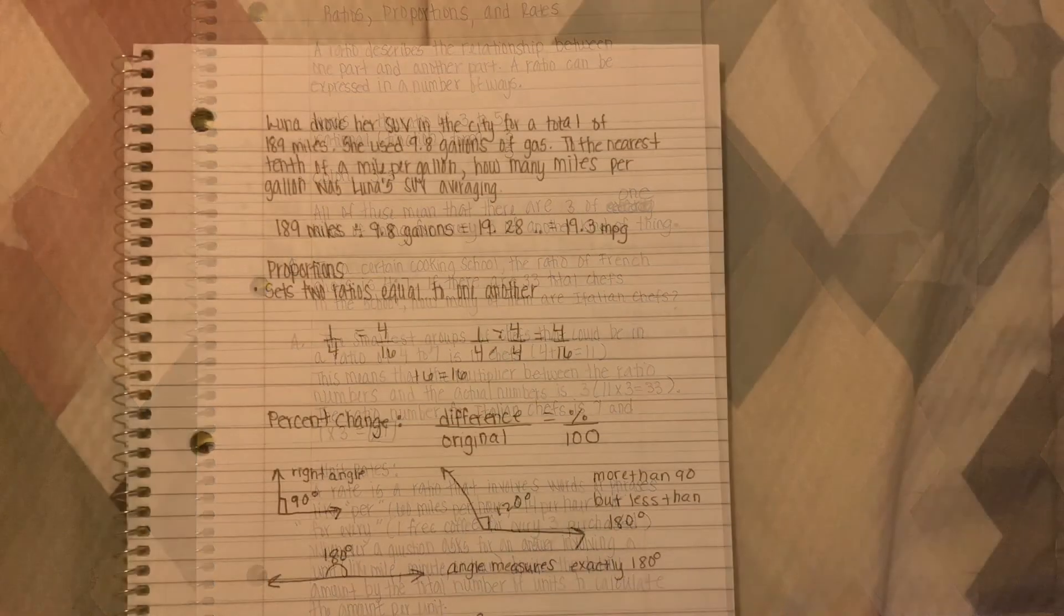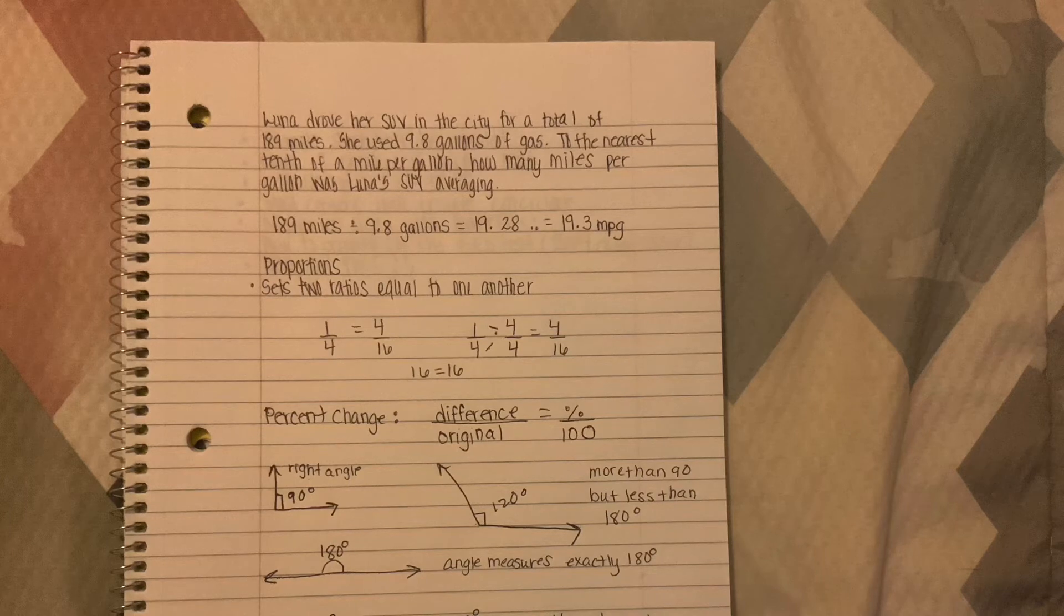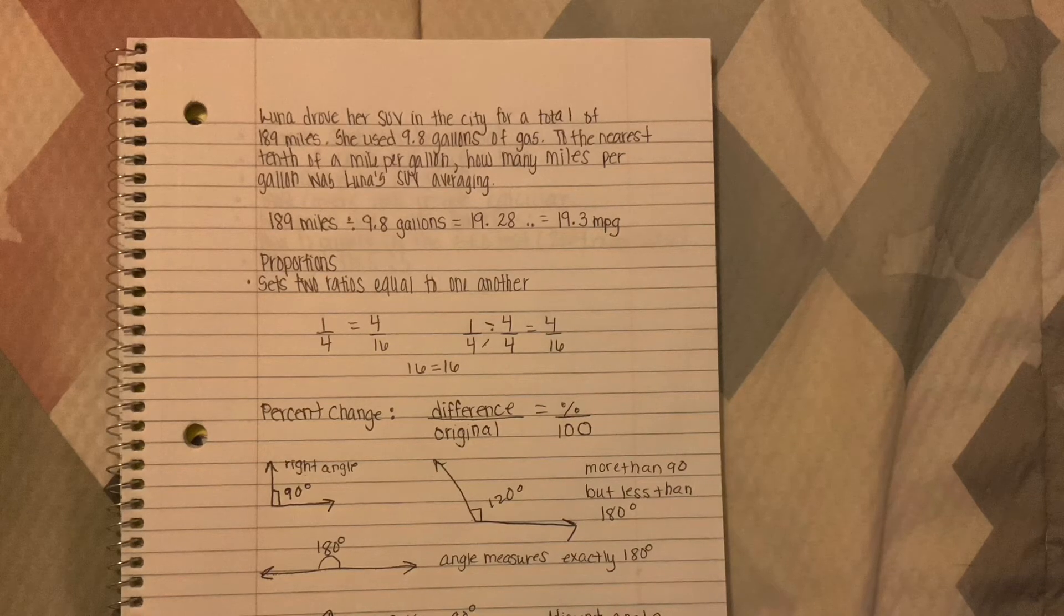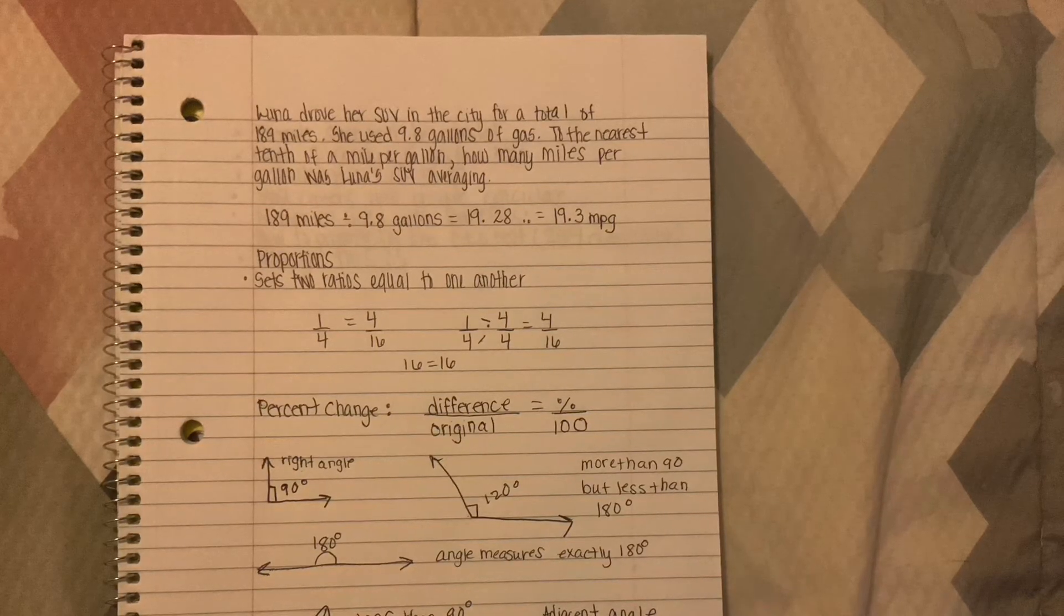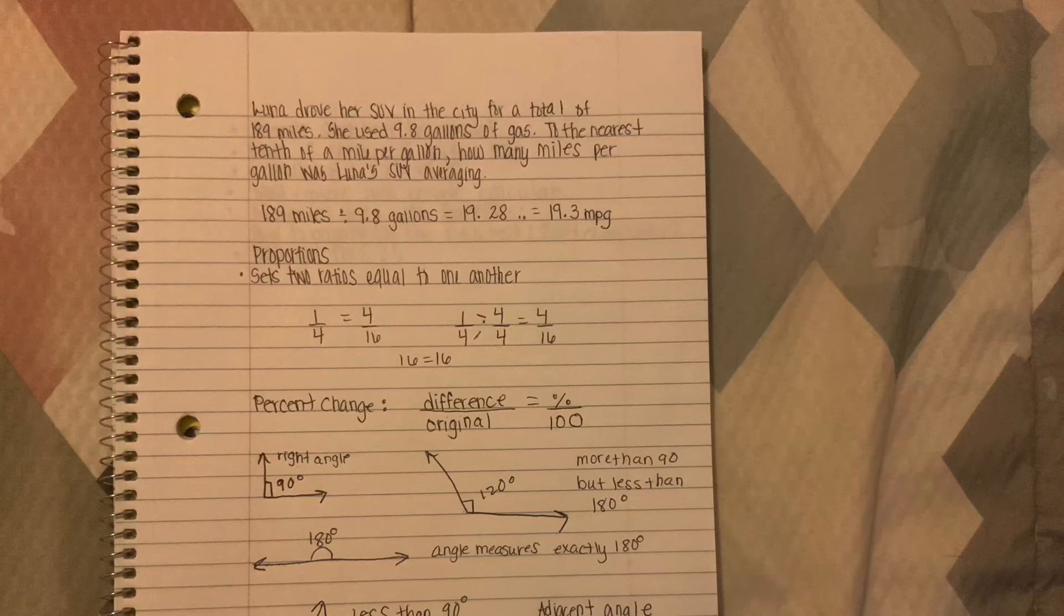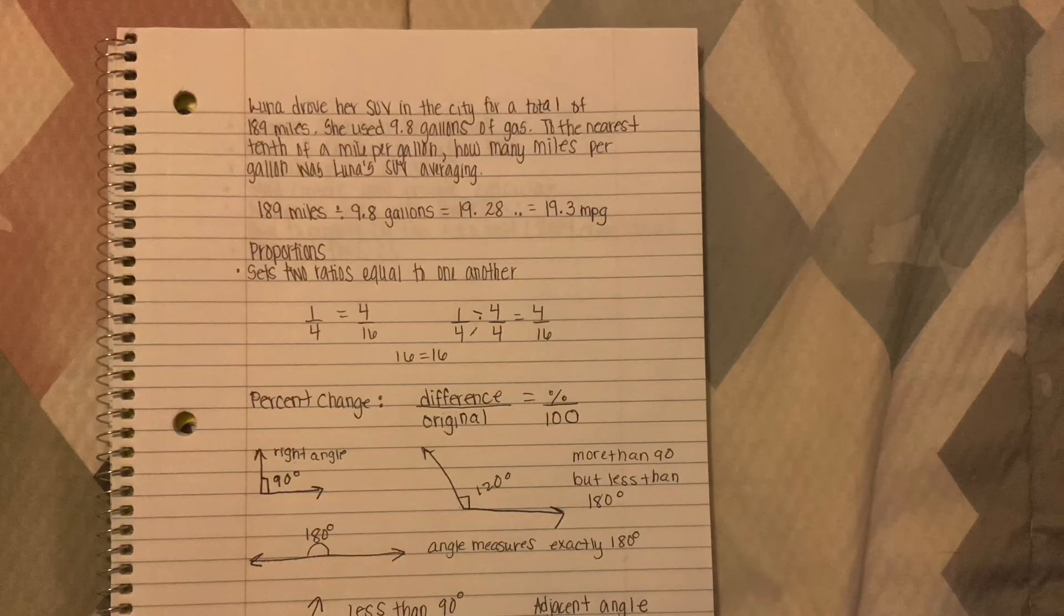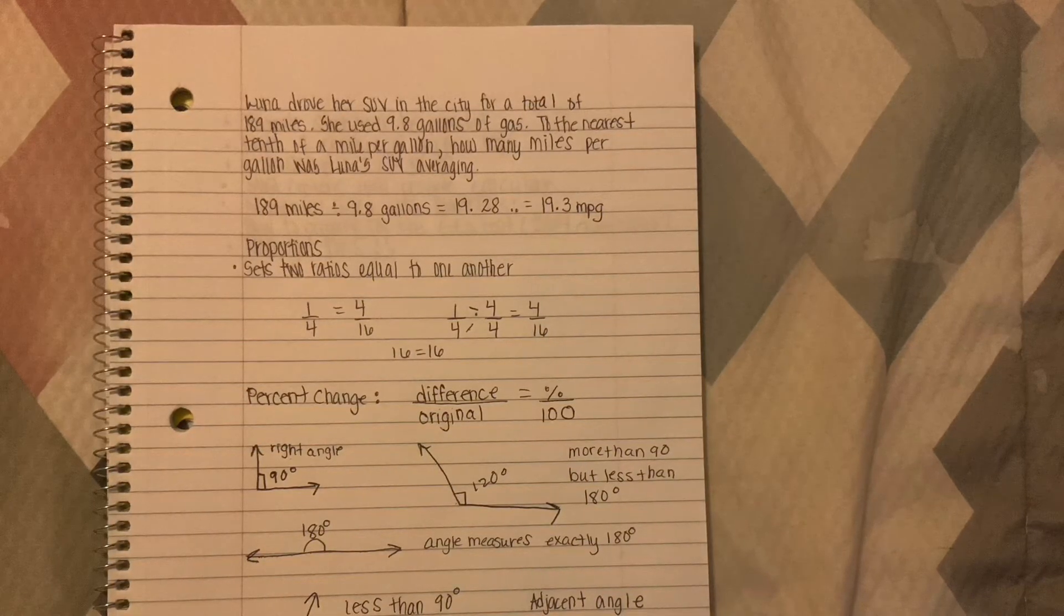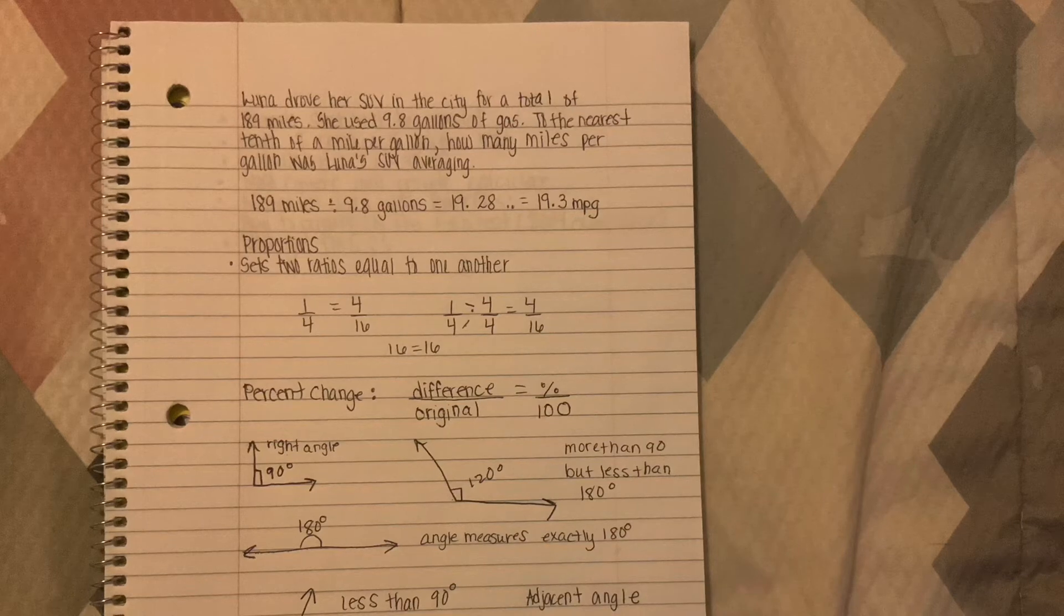Let's solve another problem with unit rates. Luna drove her SUV in the city for a total of 189 miles. She used 9.8 gallons of gas. To the nearest tenth of a mile per gallon, how many miles per gallon was Luna's SUV averaging? We take 189 miles and divide by 9.8 gallons, which gives us 19.28. Since they want us to round it up to the nearest tenth, we get 19.3 miles per gallon.